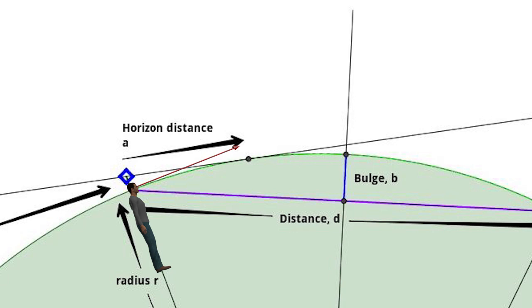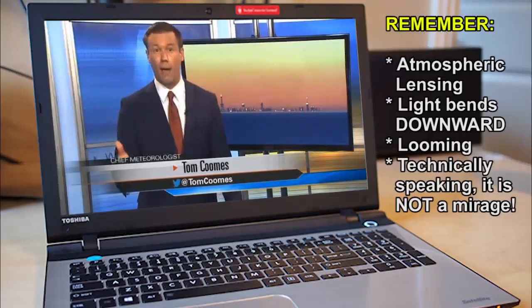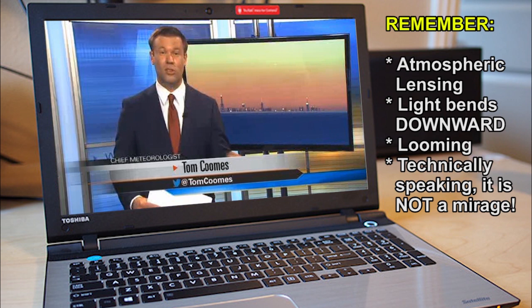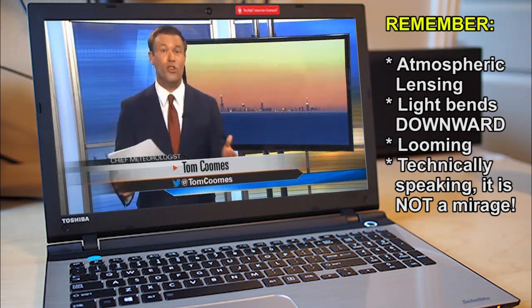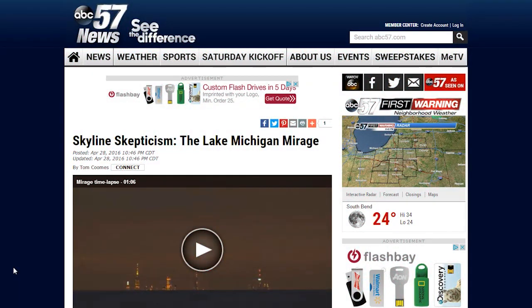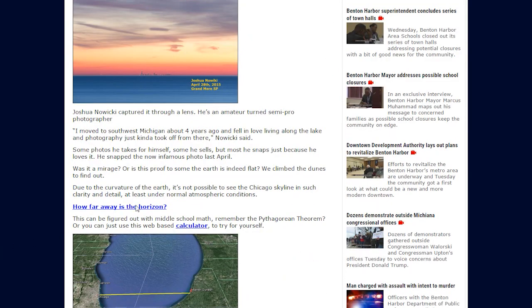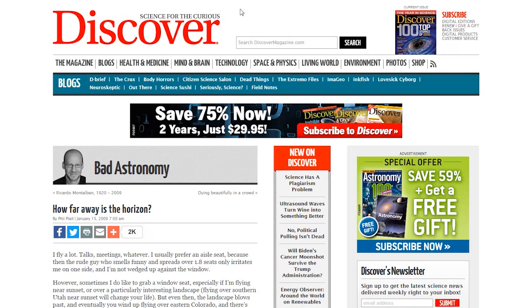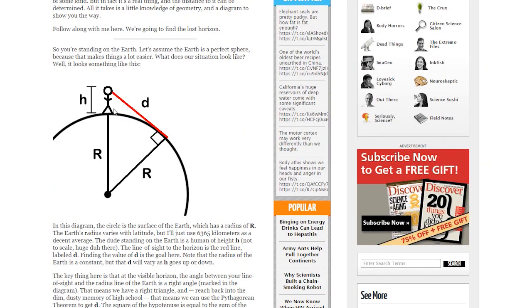But yet every single curvature chart you're going to find is going to show this same kind of nonsense where they either have the observer or the target at ridiculous angles or they're forcing the observer to look downward. In fact, if you go back to the Channel 57 ABC News report, Skyline Skepticism, the Lake Michigan Mirage, the weatherman said, we have a lot of web extras with this story. You can see the time lapse, a short lecture by Dr. Rennie, and how you can calculate how far you can see to the horizon. So let's check that out. Here on the website, he's got this link right here. How far away is the horizon? It takes you to this page right here from Discover Magazine. How far away is the horizon from bad astronomy? That's properly labeled, I think, bad astronomy. It could also be bad geometry.